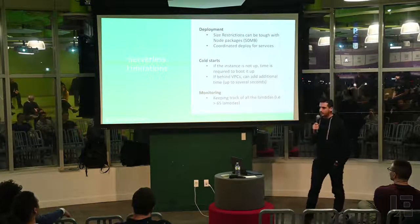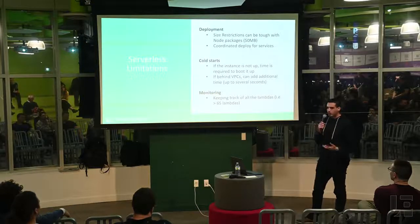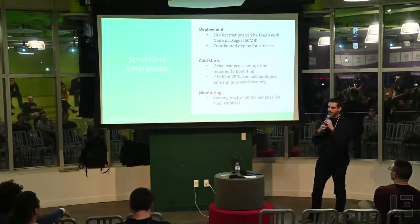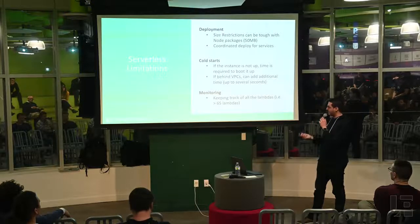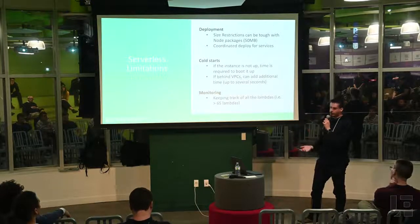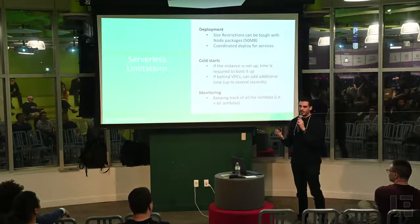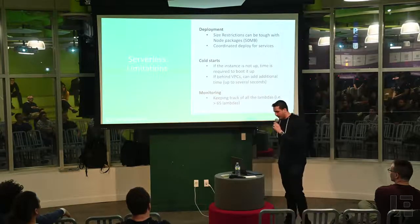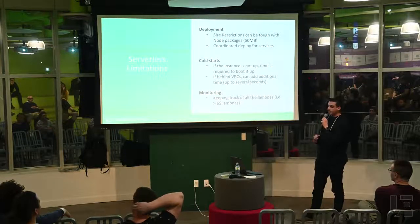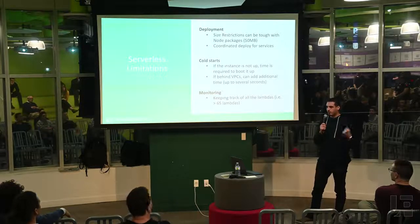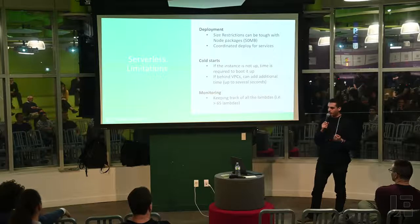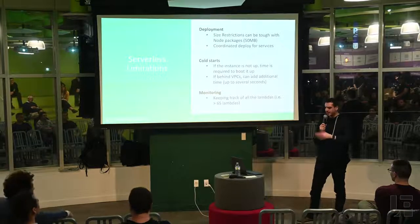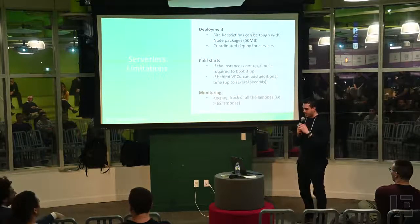From a cold start perspective — the most common limitation everybody knows about — because there's no instance always up, it takes time to boot up. In our case, because we're behind a VPC, an ENI has to boot up to give it access to the outside world, which can add a couple of seconds. The only way to go about it right now is to periodically ping your most important Lambdas to keep some containers up. Finally, monitoring — at Mortgage we have over 65 Lambdas, and keeping track of all of them can be very complicated. What we do is create our own Lambda that goes and grabs the output of all the additional Lambdas, cleans out unnecessary noise, and we use that.